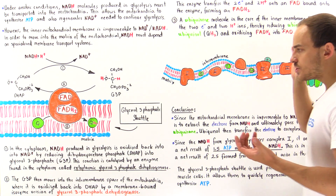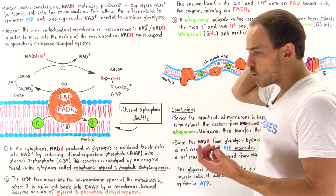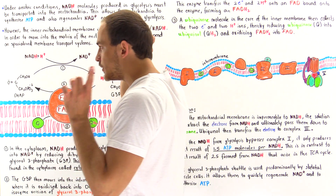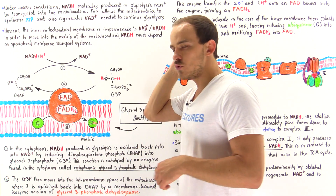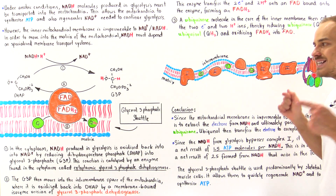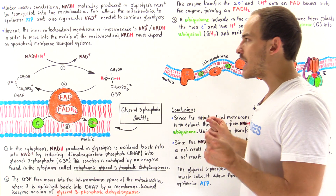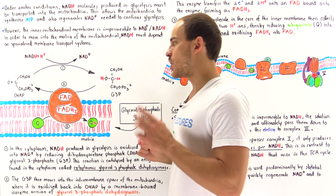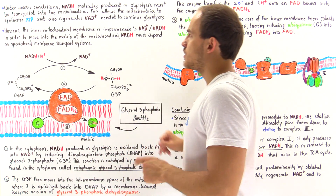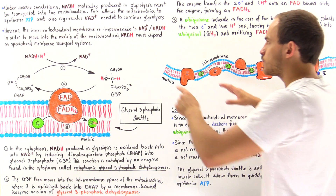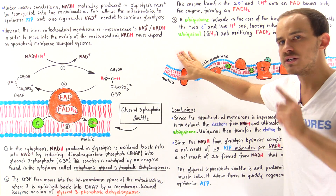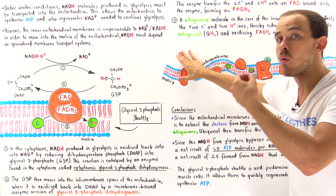The question to focus on in this lecture is: how exactly do the NADH molecules produced in glycolysis actually get to the electron transport chain? Under aerobic conditions, NADH molecules produced in glycolysis must be transported into the mitochondria.